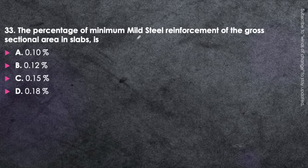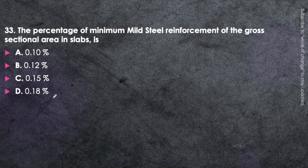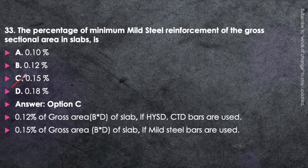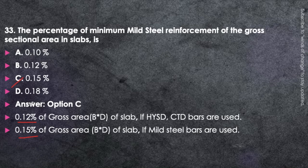Next question: The percentage of minimum mild steel reinforcement of the gross sectional area in a slab — there are two cases: for mild steel bars it is 0.15%, and for HYSD bars it is 0.12%. So the answer is option C, 0.15% of the gross area. These two values are very important. You can find them in the video of important IS-456 provisions uploaded on this channel, the link of which is in the description box.